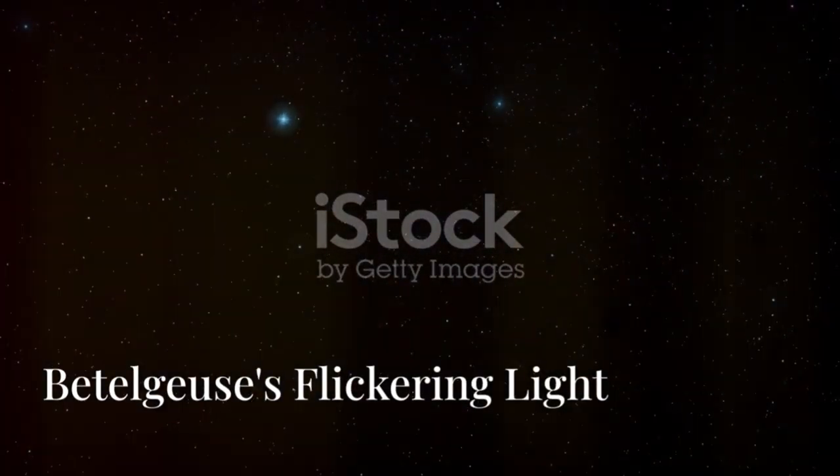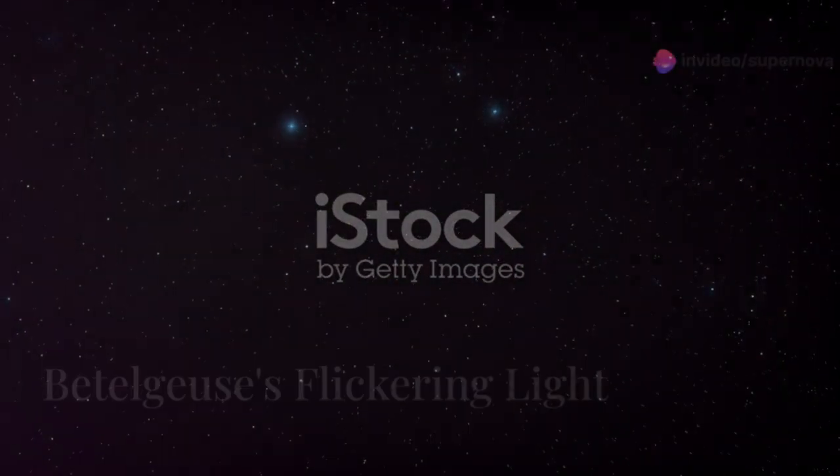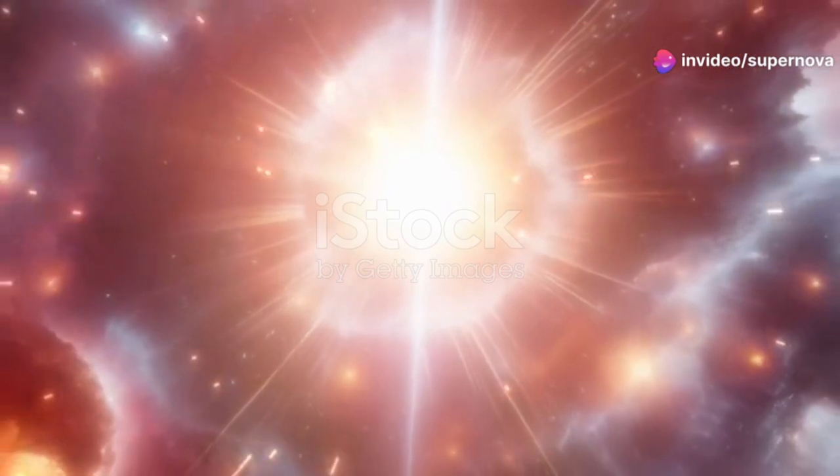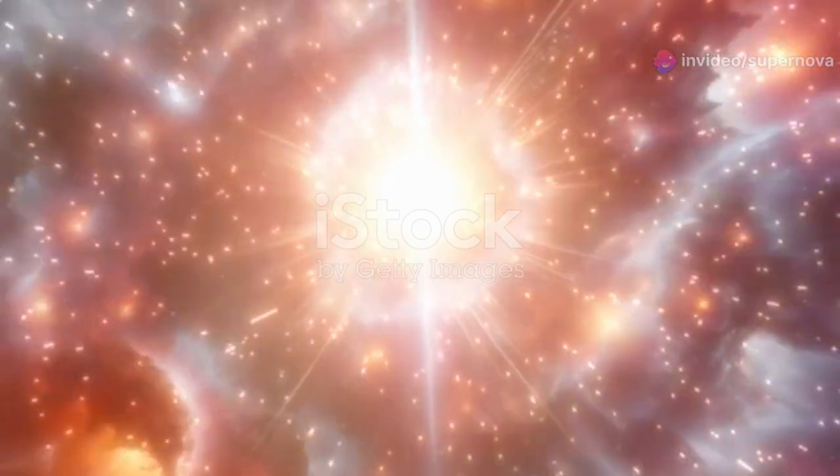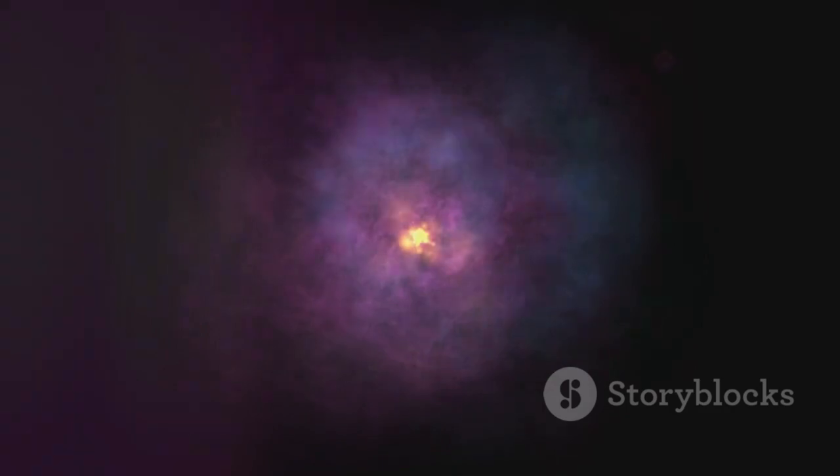Betelgeuse is a variable star, meaning its brightness fluctuates over time. These fluctuations are caused by various factors including pulsations in the star's outer layers and the ejection of massive amounts of gas and dust. Astronomers have observed Betelgeuse's brightness cycles for centuries, noting periods of dimming and brightening. These variations, while subtle, are noticeable even to the naked eye.